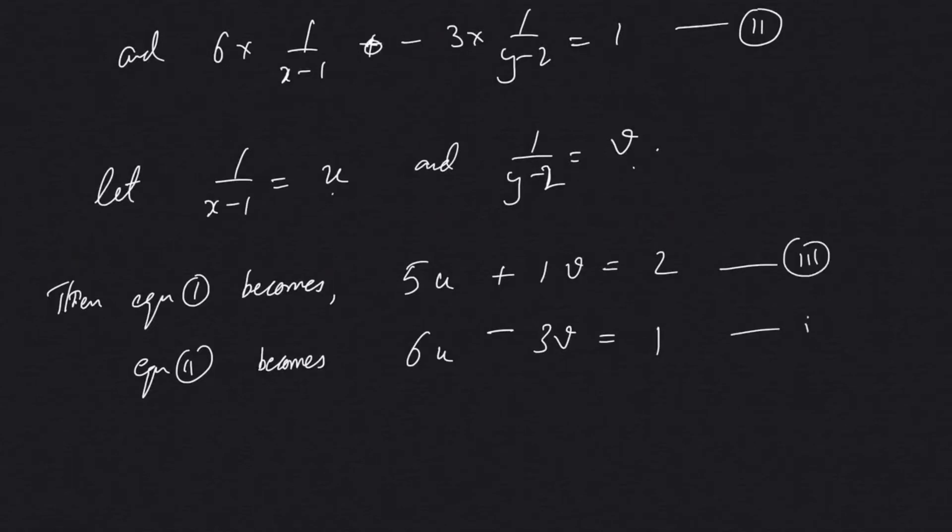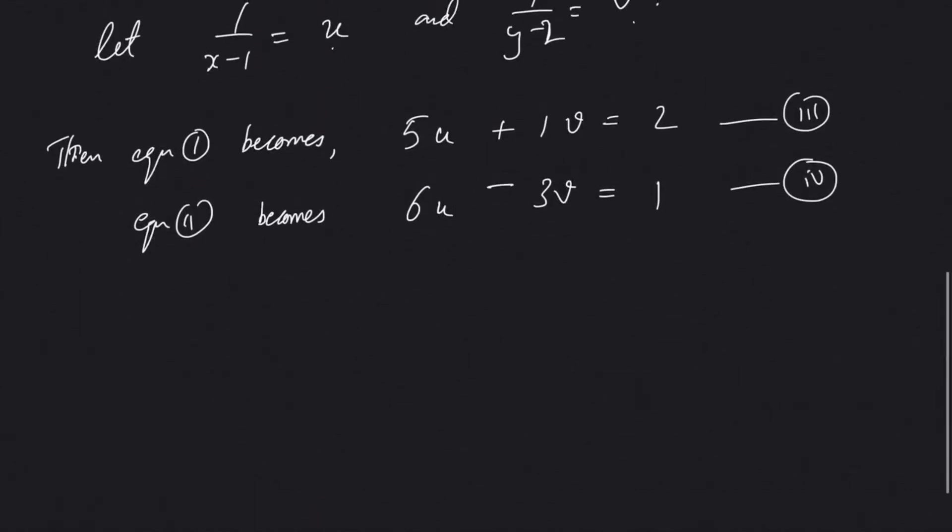Equation 2 becomes 6u minus 3v equal to 1. Name this as equation 3 and 4. We can do it by any method that we want, but I'll do it by elimination method.